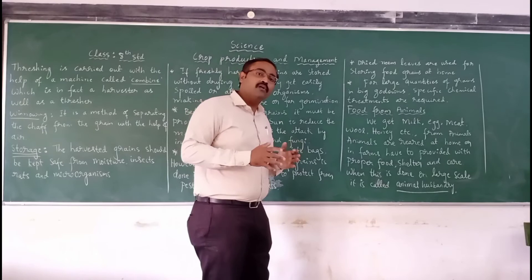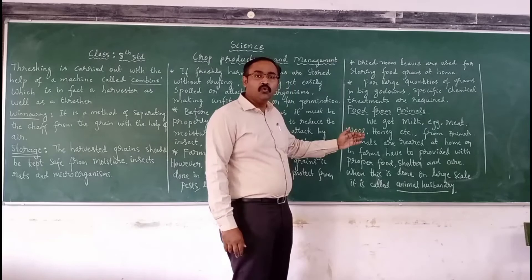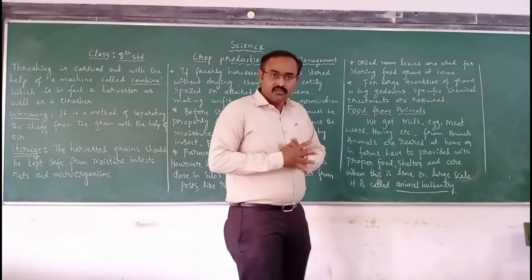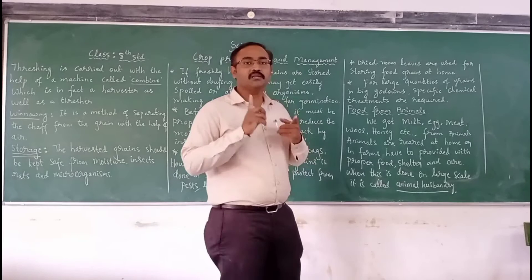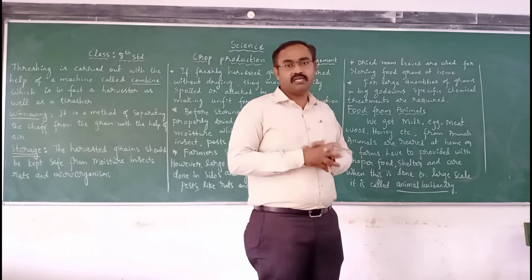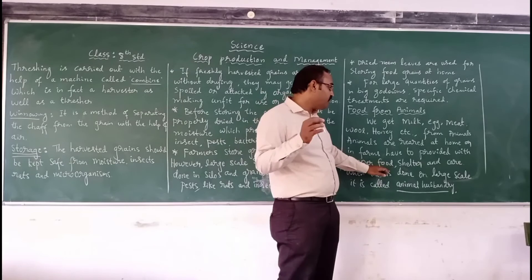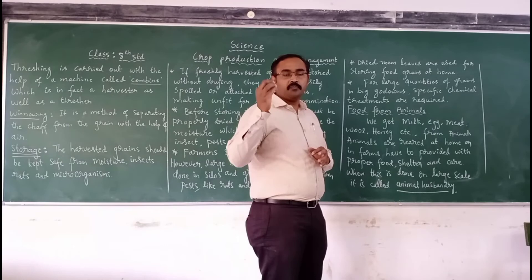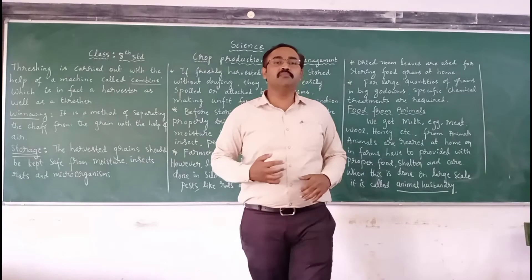We get food not only from plants — animals are also an indirect source of our food. We get milk, eggs, meat, honey, etc. from animals. Animals are raised at home or on farms. If animals are taken care of properly, they will grow adequately and we get a large quantity of milk, eggs, meat, etc. The proper practice of providing food, shelter and taking care of animals is collectively called as animal husbandry.